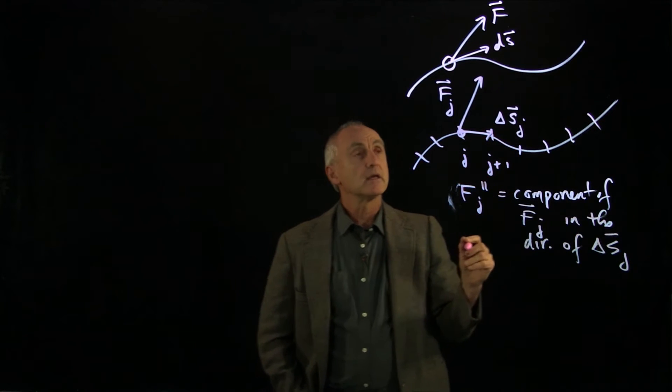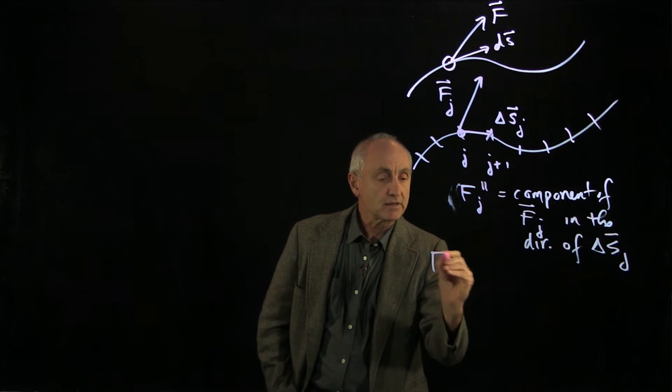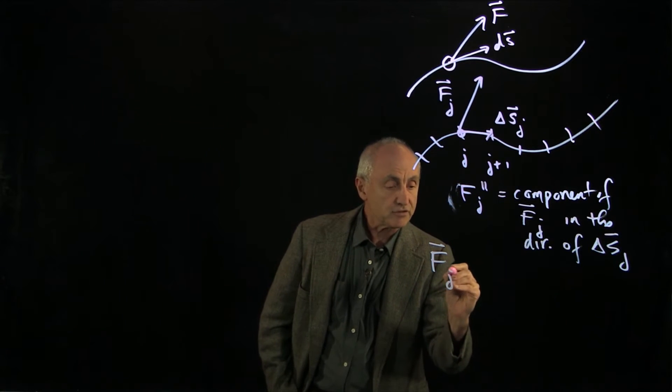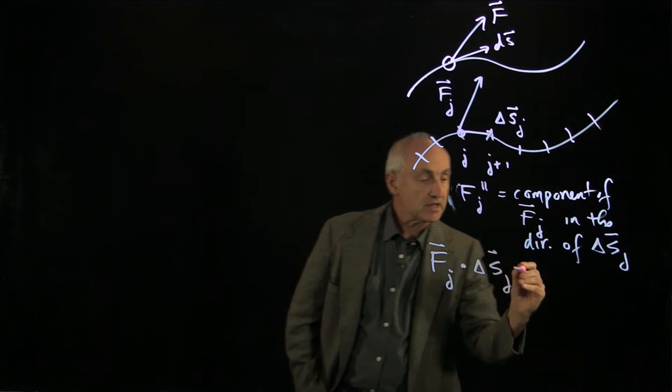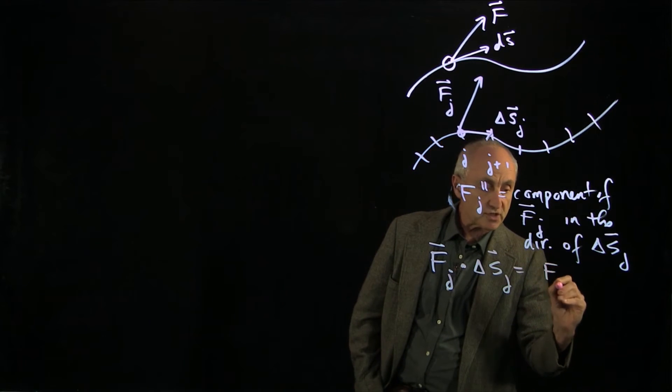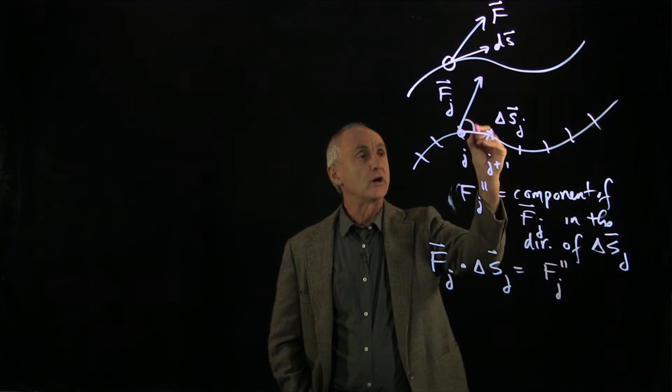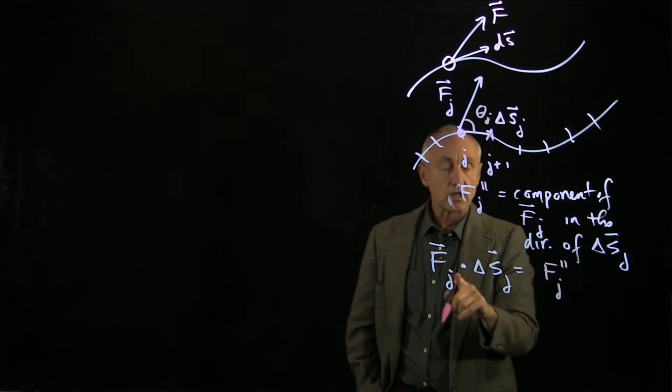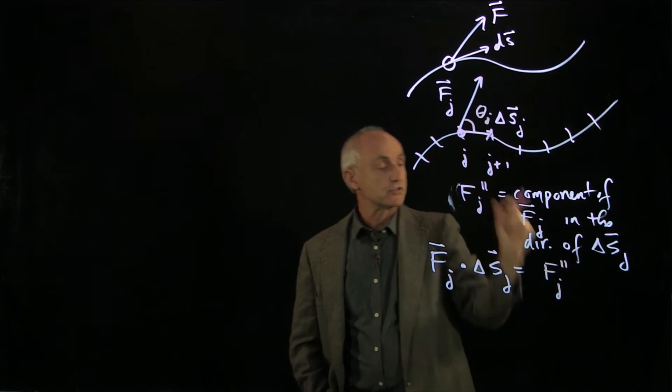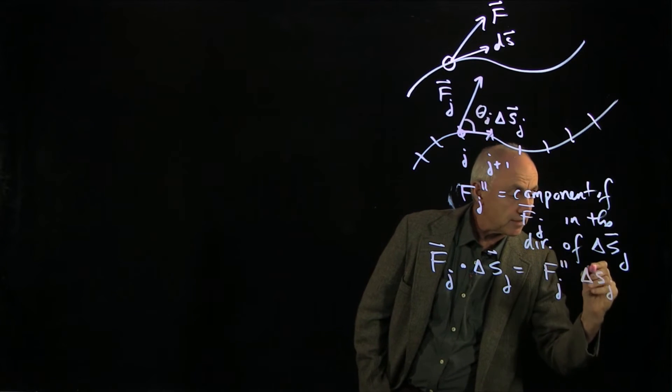The way we denote that is we can then say that if I take the dot product of Fj dot delta sj, this is the component of the force in the direction of the motion. Because remember, our dot product, if we call this angle theta j, is taking how much of one vector is in the direction of the other times the magnitude of that displacement.